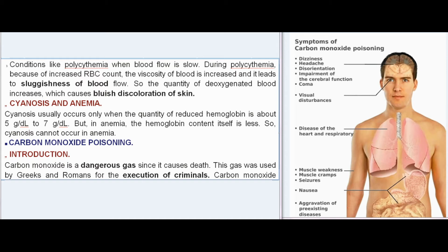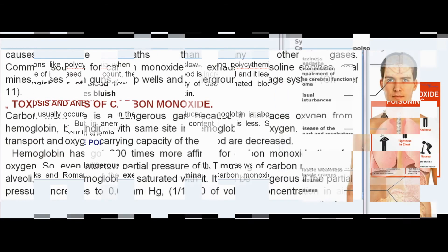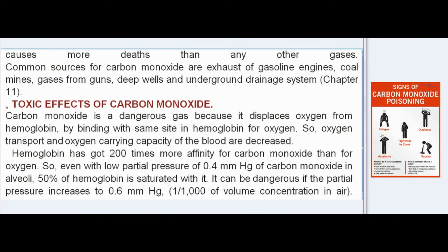Carbon monoxide is a dangerous gas that causes death. It was used by Greeks and Romans for execution of criminals and causes more deaths than any other gases. Common sources include exhaust of gasoline engines, coal mines, gases from guns, deep wells, and underground drainage systems.